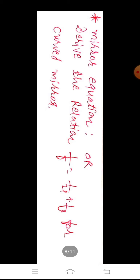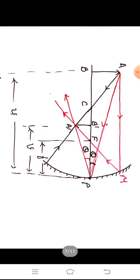Now we will discuss another equation — the mirror equation. This question may be asked in two ways: 'Derive the mirror equation,' or 'Derive the relation between object distance U, image distance V, and focal length F,' that is 1/F = 1/U + 1/V for the curved mirror. To derive this equation, see the figure carefully: a linear object AB is placed on the principal axis of the concave mirror. This equation is also valid for the convex mirror, but for ease we will always use the concave mirror to derive all equations.